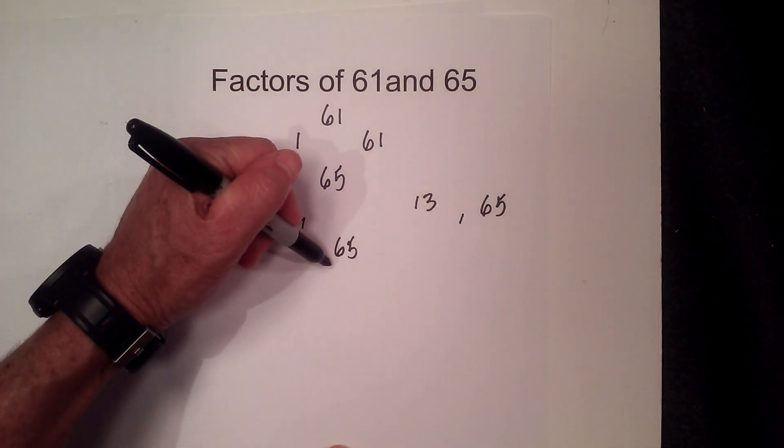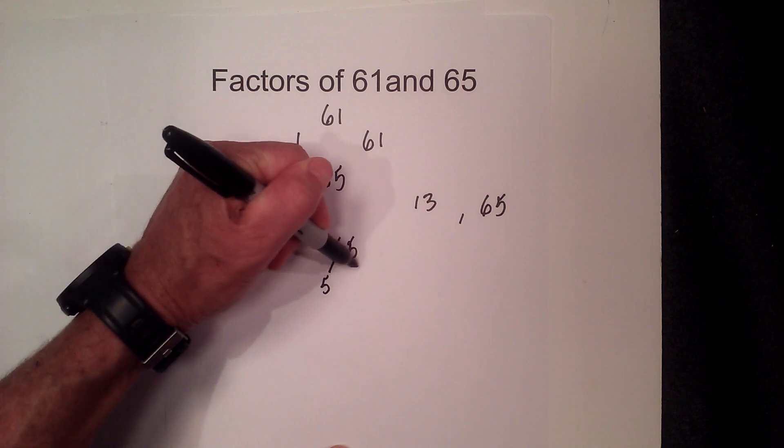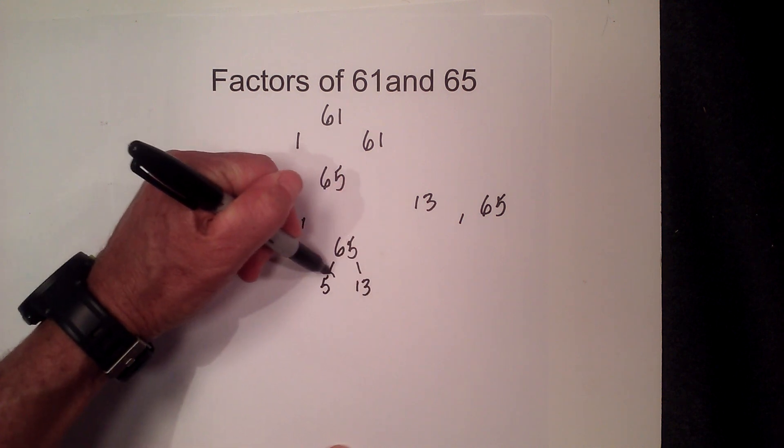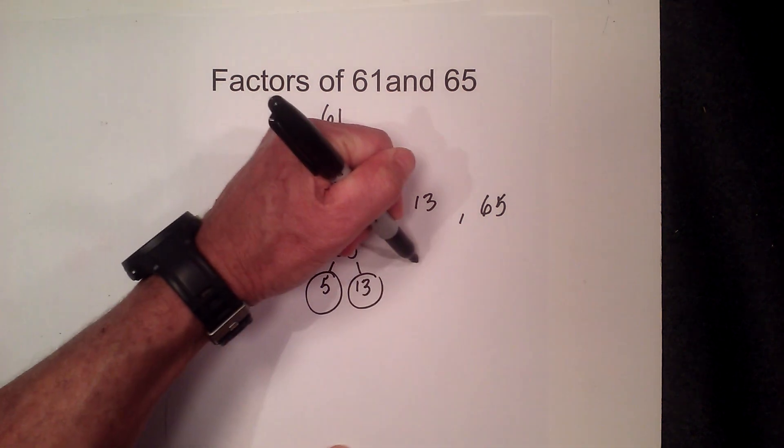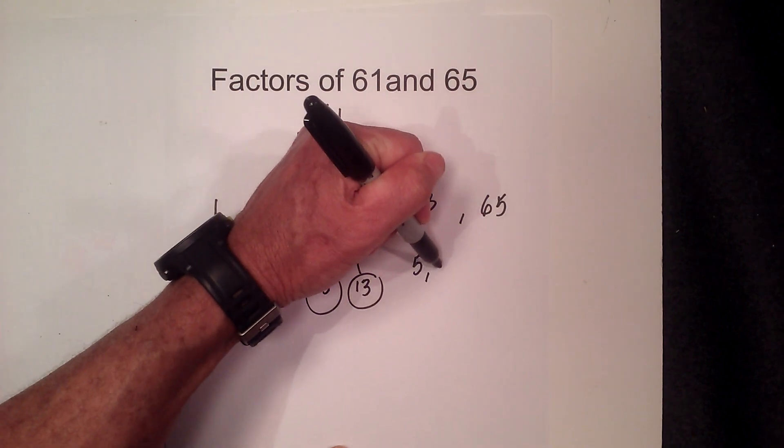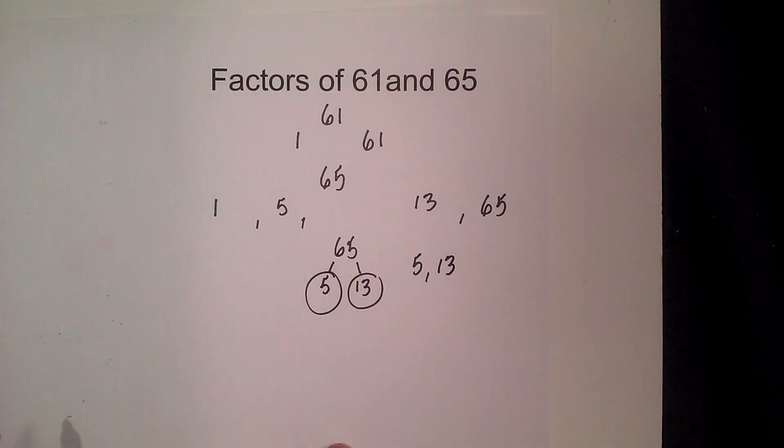you can go 5 times 13, circle both of these because they are prime, so the prime numbers for 65 are 5 and 13.